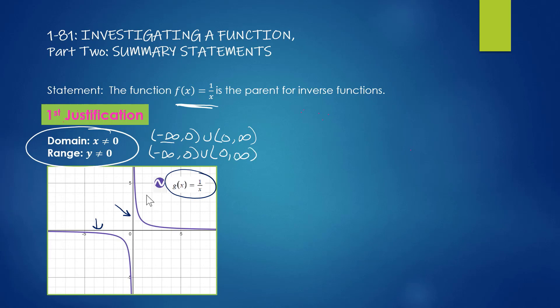In interval notation, parentheses indicate the endpoints are never reached. If 0 were included, you'd write a bracket instead. So (−∞, 0) ∪ (0, +∞) means the function never reaches negative infinity, 0, or positive infinity on either side. If you have questions about interval notation, leave them in the comments and I'd be happy to help.